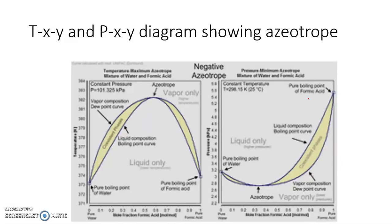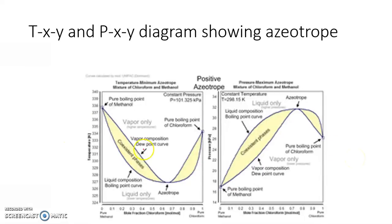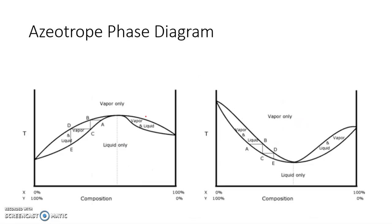Similarly, the TXY and PXY diagrams together: this is a TXY diagram at one atmosphere. This is the azeotropic composition — this is a maximum boiling, minimum pressure, negative deviation azeotropic system. The other is a minimum boiling, maximum pressure, positive deviation system.